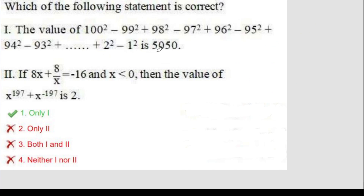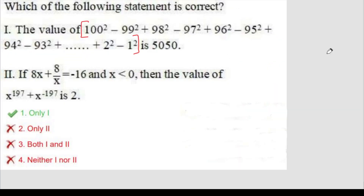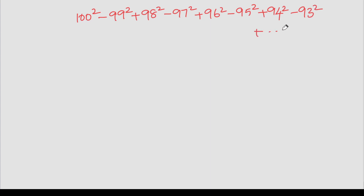There are two statements in this sum. In this series, we have from 100 to 1, and from 100 to 11. In generalize, we have from 100 to 1 — in even number squares, we have a positive sign, and in odd number squares, we have a negative sign. That means: minus 99 square, plus 98 square, minus 97 square, plus 96 square, minus 95 square, plus 94 square, minus 93 square — and so on, down to minus 1 square.